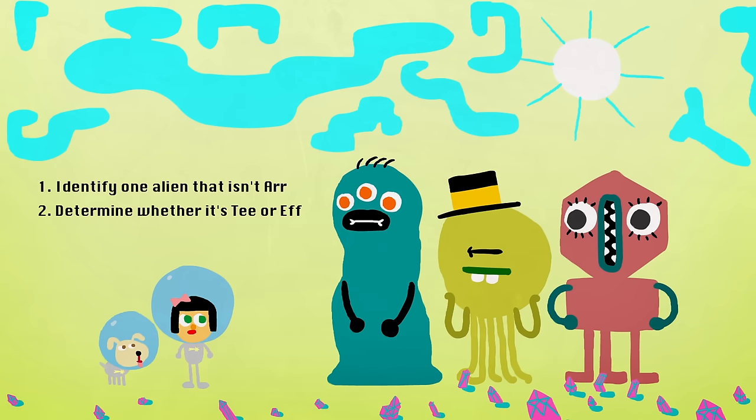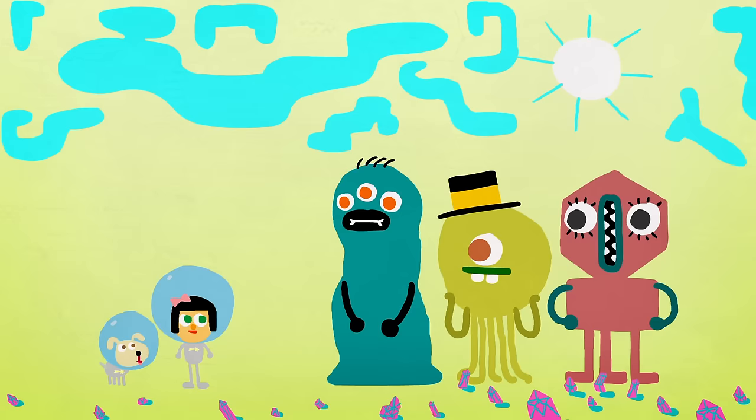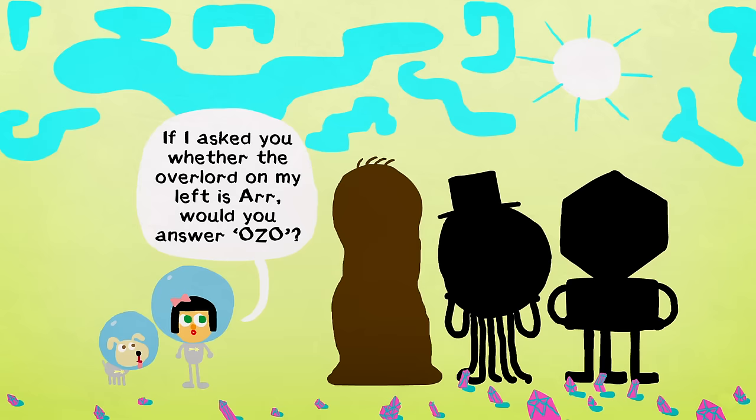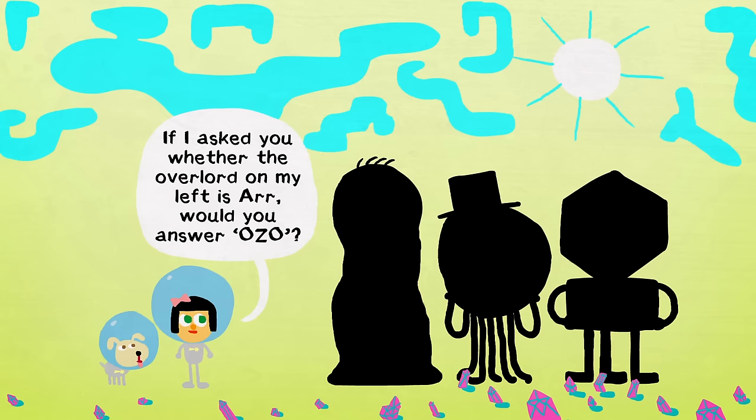We can use our first question to identify one alien lord that definitely isn't R. Then we can use the second to find out whether it's T or F. And once we know that, we can ask it to identify one of the others. So let's begin.